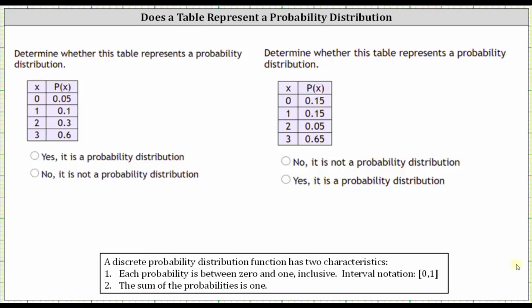We're asked to determine whether each table represents a probability distribution. For a discrete probability distribution, two conditions must be met.